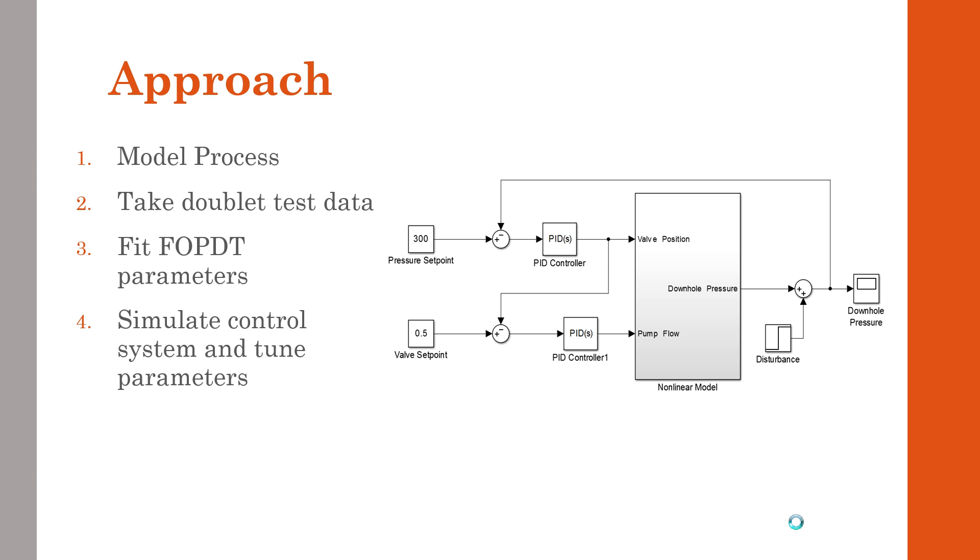Our final goal, shown on the right, was to control pressure mainly with the choke valve, which was a quick acting control, and then use the pump flow rate to control the valve position and return it back to its set point. This created a quick acting control with the valve position and then a slower acting return with the pump flow rate, sort of a cascading control. That was our end goal when we started this project.